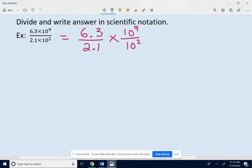That is a legal mathematical thing to do. I could just rewrite this: 6.3 over 2.1 times 10 to the 9th over 10 to the 2nd. Basically, I'm just thinking of that as a multiply symbol right there. Then I can just divide both parts of this problem.